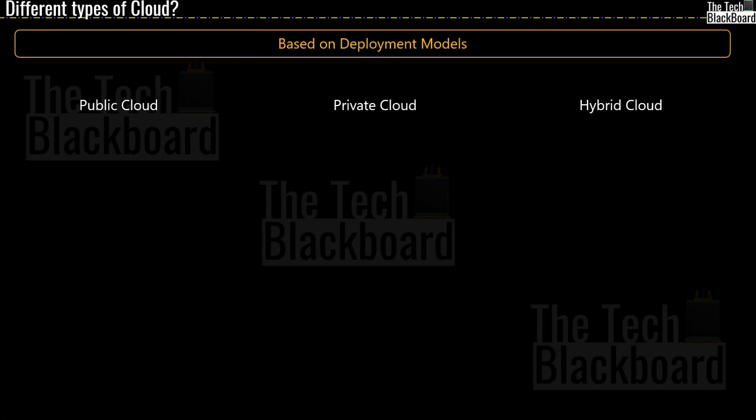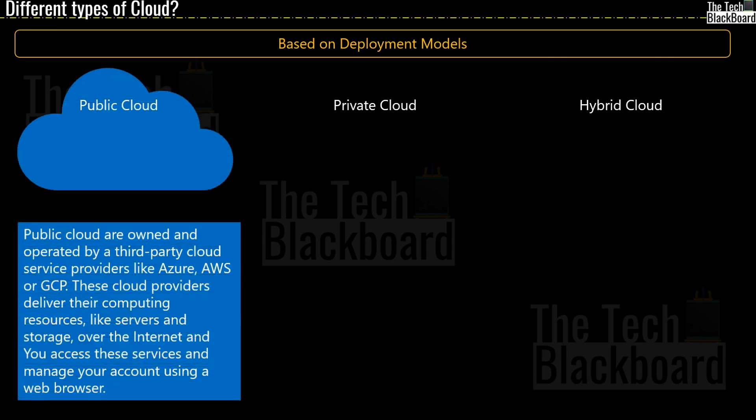Now let's move towards another very important concept and talk about deployment models in cloud. As you can see on the screen, deployment models can be divided into three categories. The first one is public cloud, then we have private cloud, and then we have hybrid cloud. Public clouds are owned and operated by third-party cloud service providers like Azure, AWS, and GCP. These cloud providers deliver their computing resources like servers and storage over the internet, and you can access these services and manage your account using a web browser.